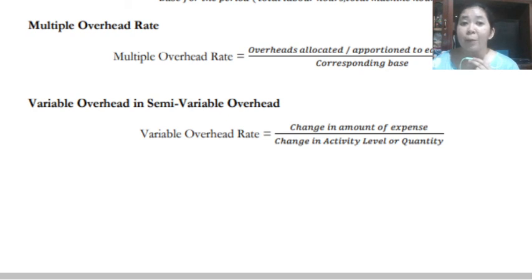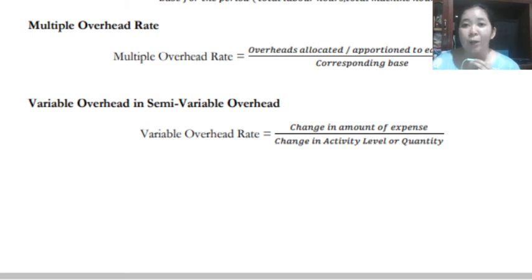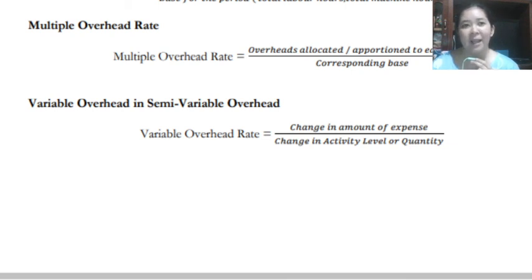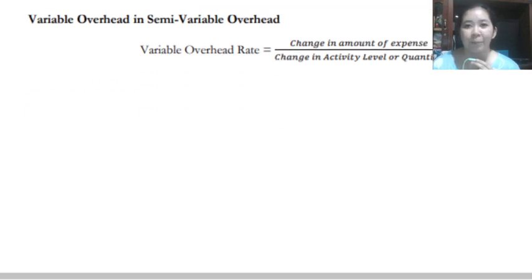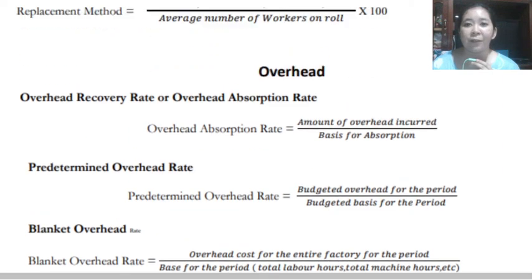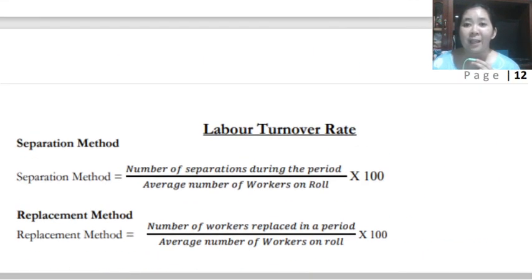We also have the variable overhead rate. This is equal to the change in amount of expense divided by the change in activity level or quantity. There is a technique used to separate variable and fixed costs when the given data is mixed costs — you will learn that in management science in our next modules. Those are the different and common formulas used in production, specifically for materials cost, labor cost, and factory overhead costs.